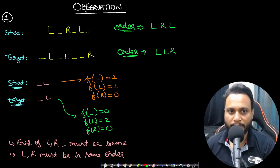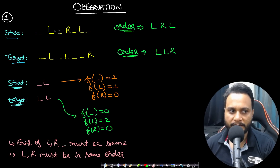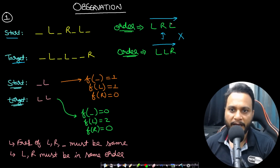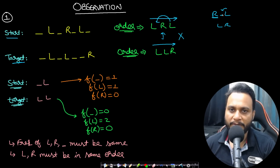For solving this problem we need several observations. The first observation: if you look at start and target and write down the ordering of the pieces, in start the ordering from left to right is L, R, L — and in target it is L, L, R. If the ordering comes out to be different, they can never match. Since we cannot swap pieces — you can only move a piece if there is adjacent space — the ordering will never change. So if the ordering of L and R is not the same (ignoring underscores), it will never be possible to convert start to target.